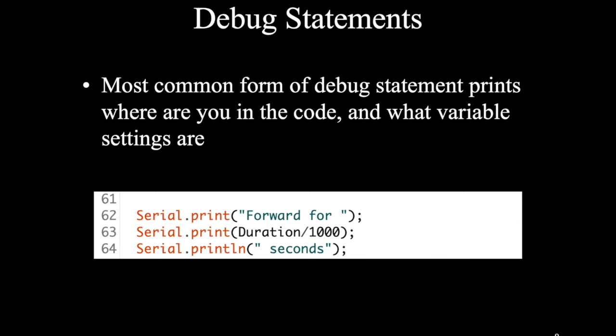In the advanced driving code, the forward function includes serial print statements that output 'I'm moving forward' and the value of the duration parameter. You can add more — printing PWM values, for instance. If the robot is doing something unexpected, add debug statements, hook up to the serial monitor, and see what the code is actually doing versus what you thought you coded. Sometimes a parameter got set wrong, or what you thought you wrote isn't actually what you wrote.